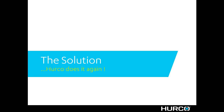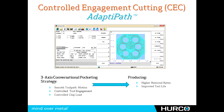So what has Herco done to help solve this problem? We've created something called Adaptive Path — a controlled engagement cutting algorithm that ensures that once we have determined how much material we want this tool to engage, it will never engage any more than that amount, even in the corners. It will alter the tool path to ensure that we do not encounter those high-heat, high-pressure situations of the tool burying itself in unexpectedly.